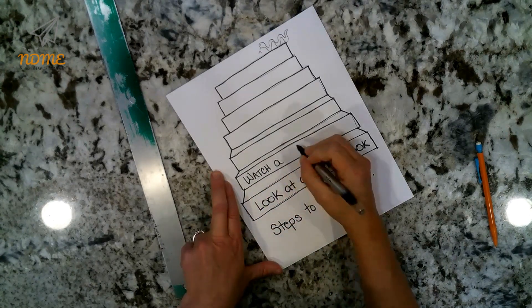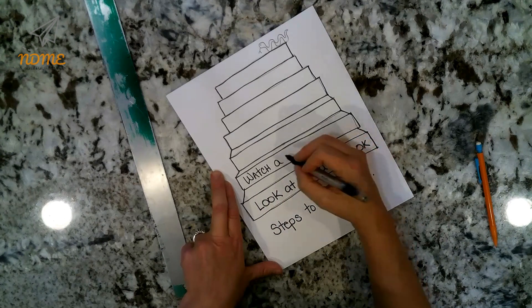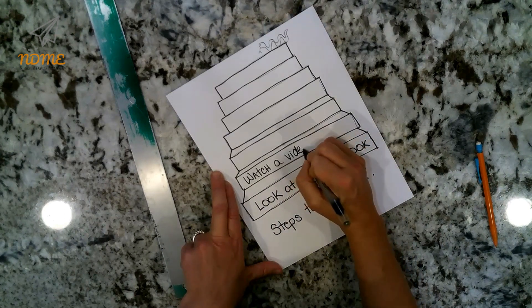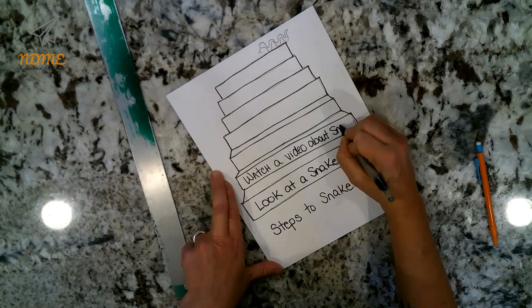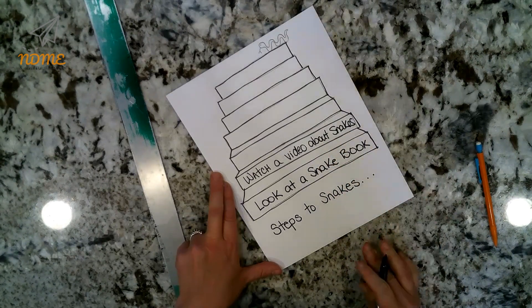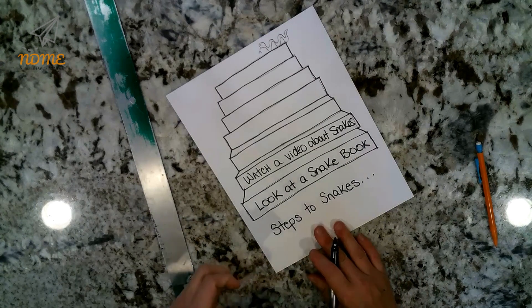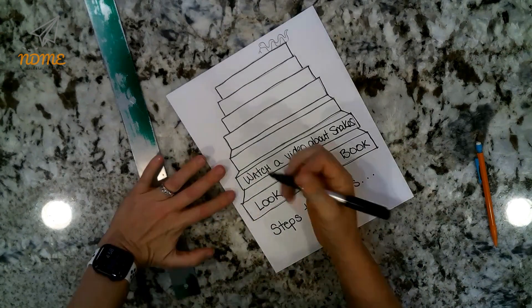So for instance, I said I'd like to look at a book about snakes with pictures of snakes inside of it. And believe it or not, that even scares me sometimes. And then maybe I'll go and watch a video about snakes. So if a book is scary, a video is a little bit scarier, right?